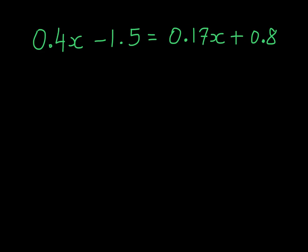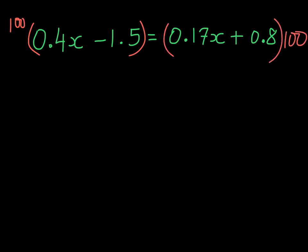Here's our first example with decimals. Here we have one decimal place, one decimal place, two decimal places, and one decimal place. This means we have to multiply the whole equation by 100 — on the left-hand side, and on the right-hand side. Remember what this means: we're going to move the decimal point 2 times to the right in each term.